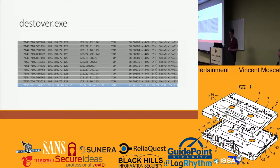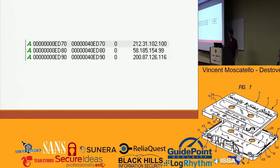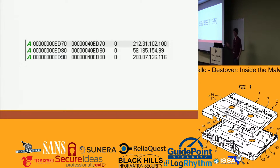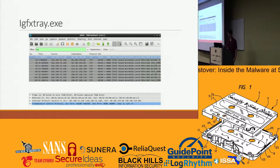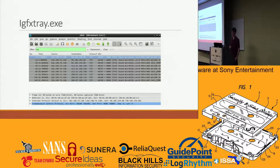The IP addresses it tries to contact are in plain text — really easy to see. Just running strings on the binary, forensics 101, these are all plain-text hard-coded IP addresses. For IGFXtray, it tries to call home a few times on port 8080 to each of those IP addresses that were statically coded, and it does that to each IP address three times.